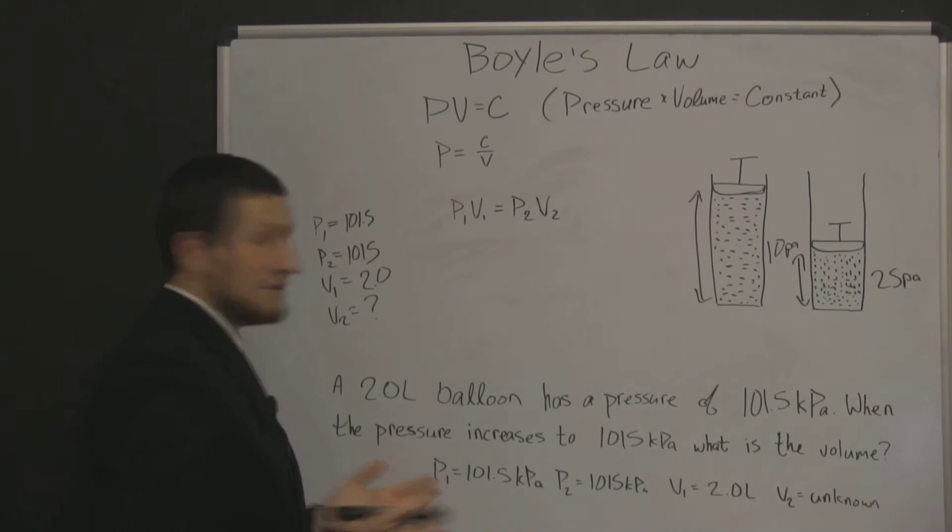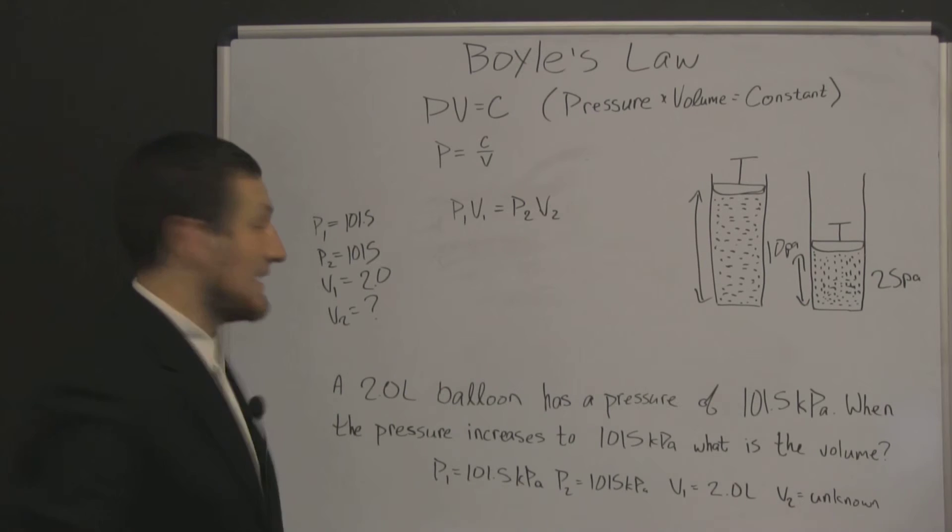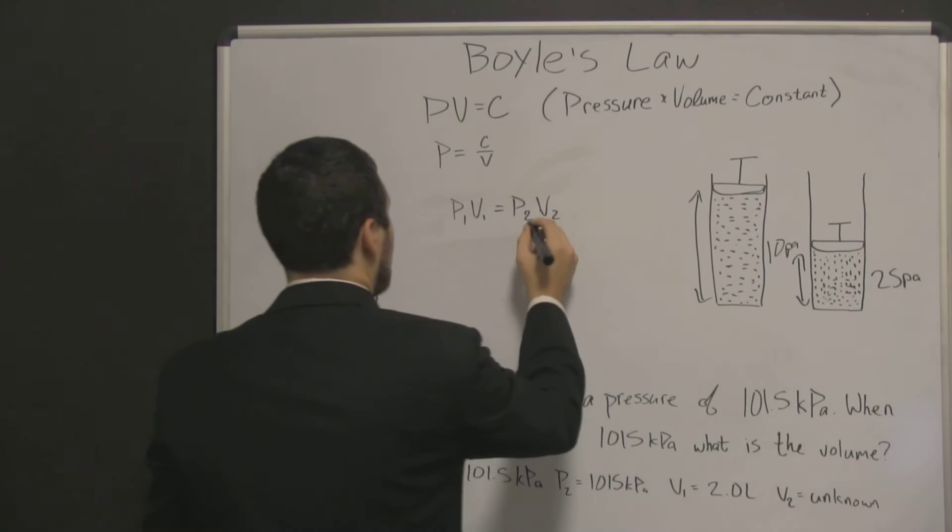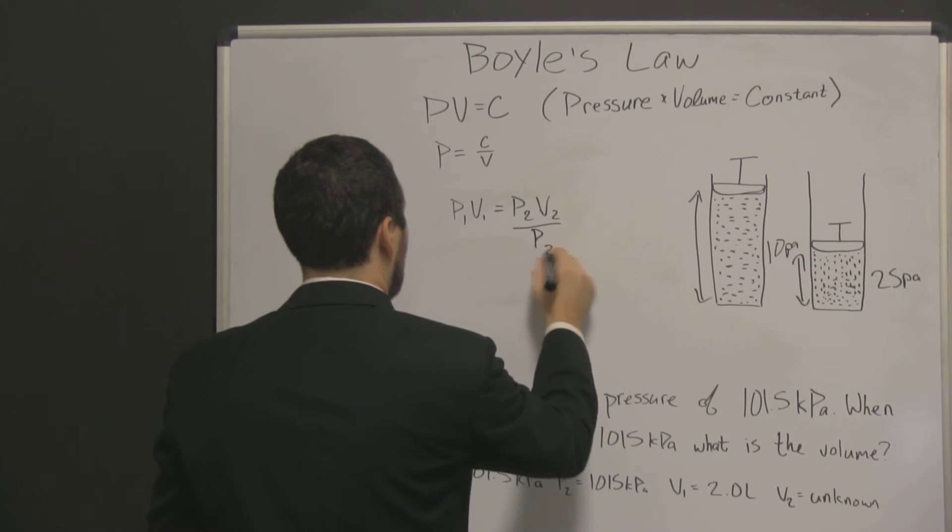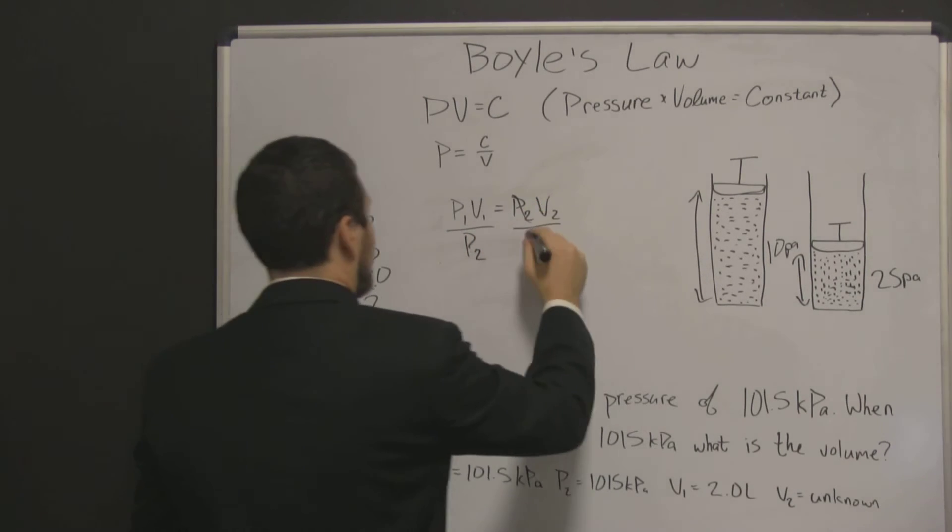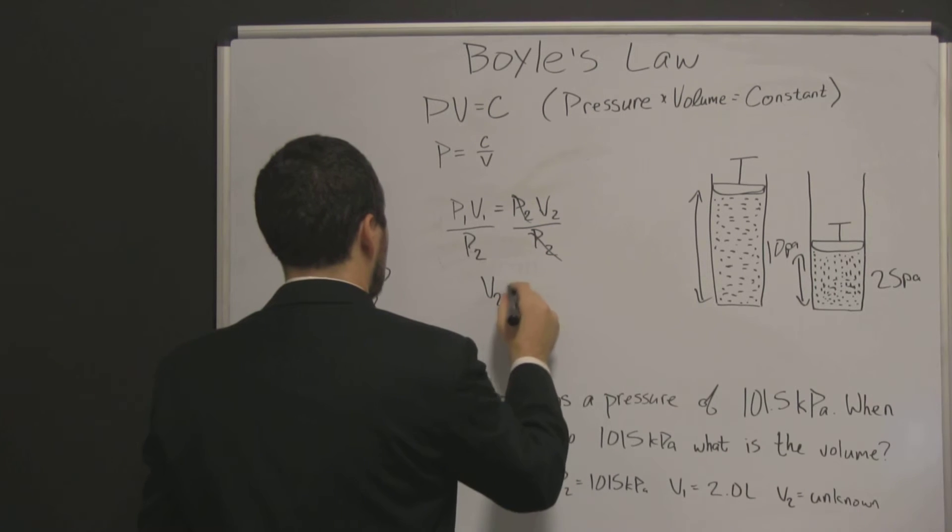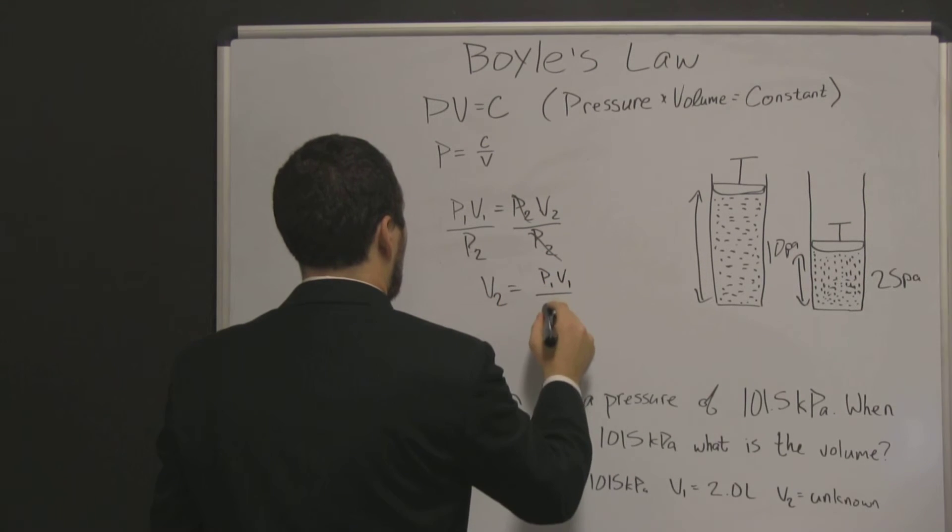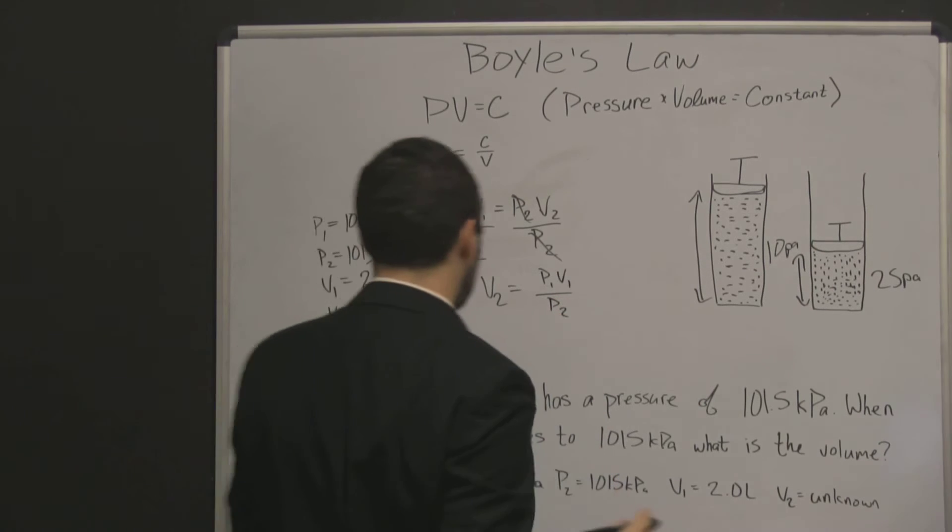And what happens, because we know what we're looking for, our second volume, we can actually solve this before we plug in any of our numbers. And our P2 cancels. So V2 is equal to P1 V1 over P2.